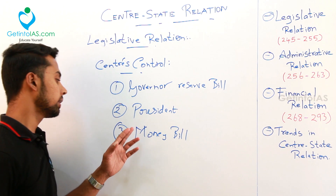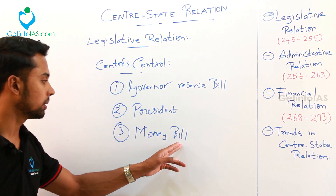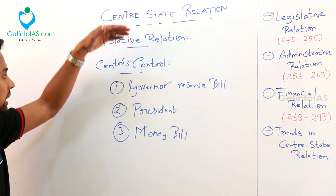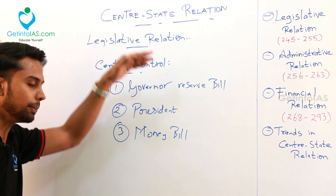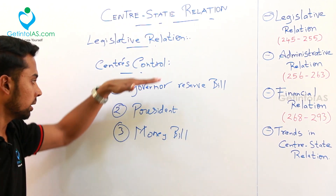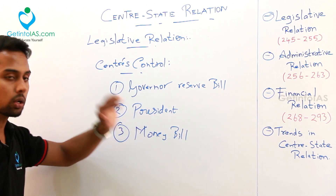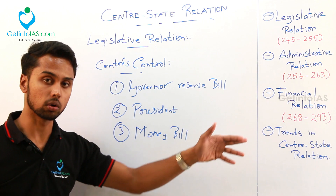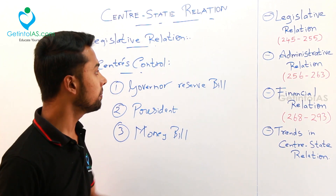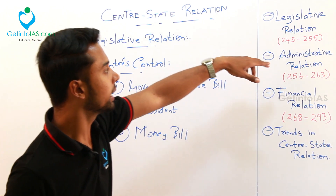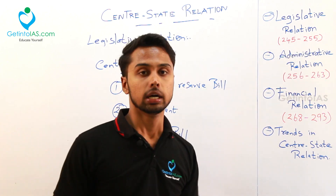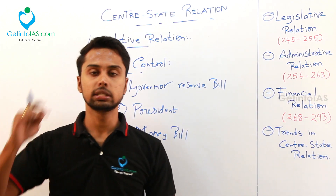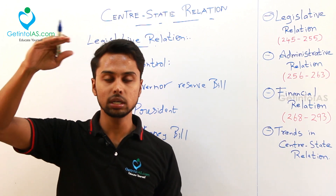So there came a clash, which led to a somewhat frustrated relation between center and state. We will study the relations in three modules: legislative relations, administrative relations, and financial relations. Articles 245 to 255 are covered. Articles are not important for UPSC, but if you are preparing for state government exams, have a note of those articles.